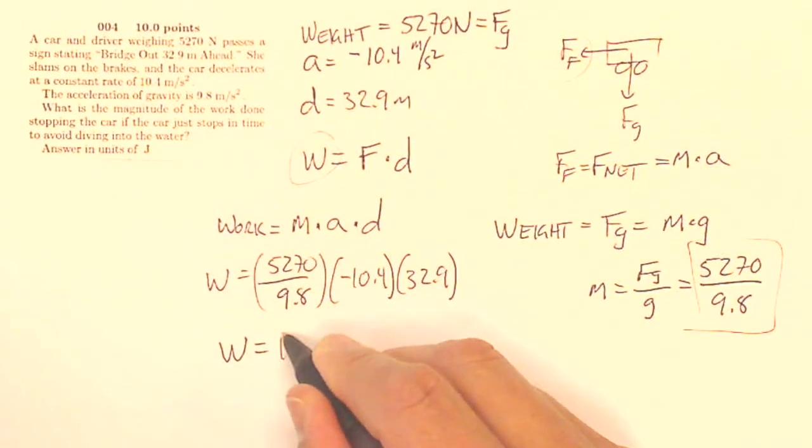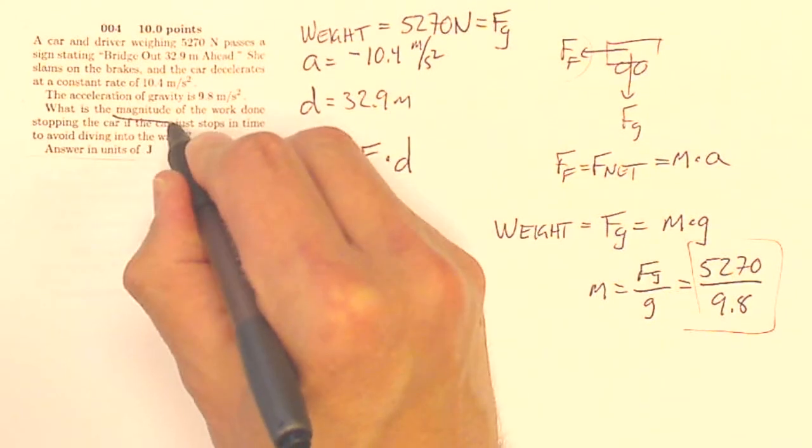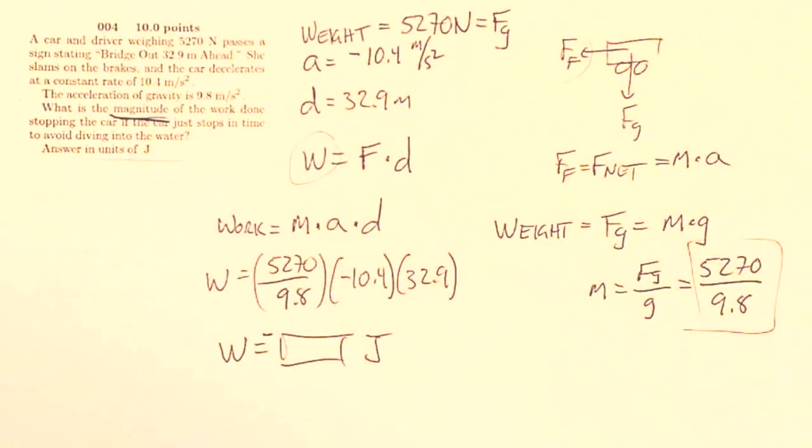When I do all that, I will get some amount of work done, and that will be in joules. And that's going to be negative, but this says what is the magnitude, so I've got to make sure I enter that as a positive number.